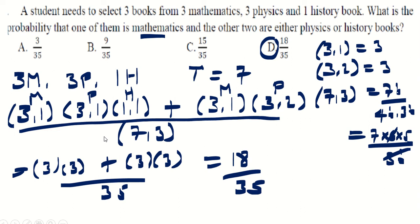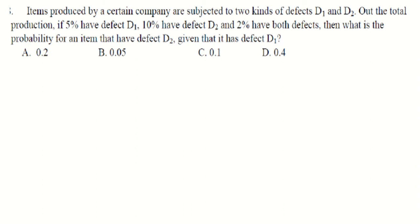The next question: items produced by a company are subject to two kinds of defects — defect D1 and defect D2. Out of total production, 5% have defect D1, 10% have defect D2, and 2% have both defects. What is the probability that an item has defect D2, given that it already has defect D1?